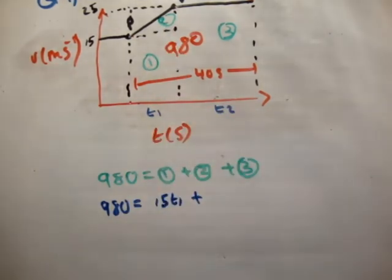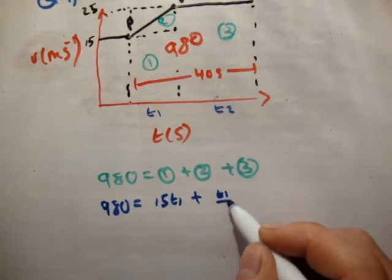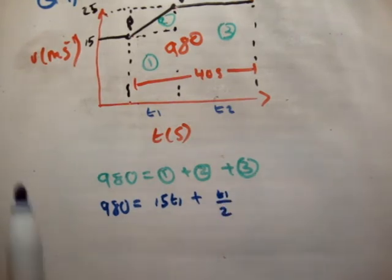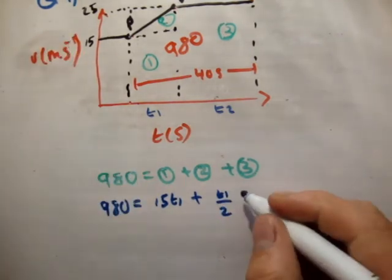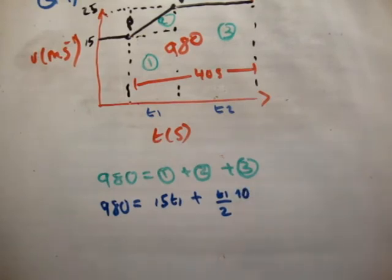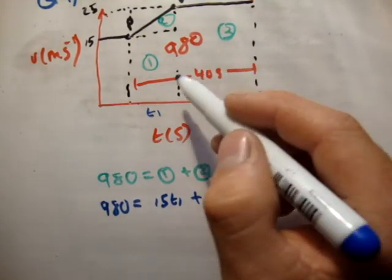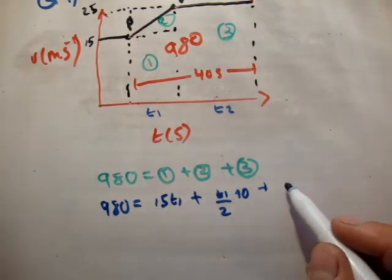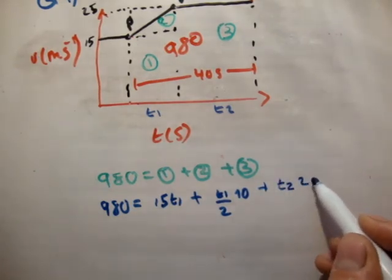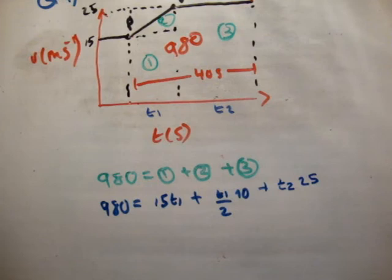Plus the area of the triangle is half T1, so T1 over 2 times the height. It goes between 15 and 25, so the height of that triangle is 10 units, plus the area of this rectangle here, which is T2 times 25.